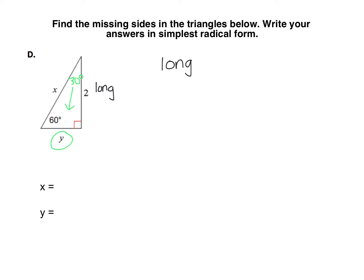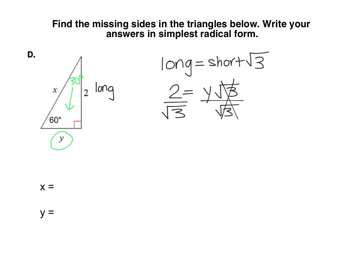Remember the long leg is just the short leg times root 3, so here 2 has to be equal to y, my short leg, times the square root of 3. To get y by itself, we need to divide each side by root 3. Since there isn't a root 3 in the numerator to cancel with the root 3 in the denominator, we're going to need to rationalize the denominator. y is 2 over the square root of 3, but we don't want a root 3 in the denominator for simplest radical form.